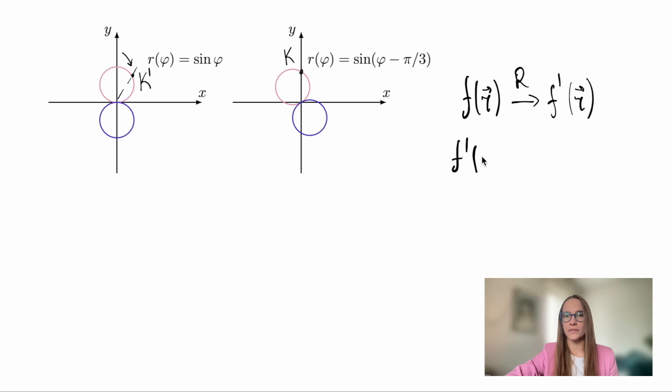This means that the rotated function f prime of r is written as the original function evaluated at the point rotated by the inverse angle. That's why we use r to the power minus 1 here.